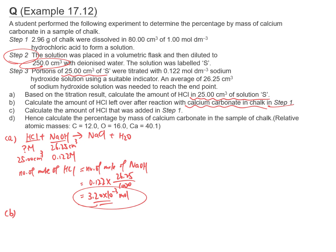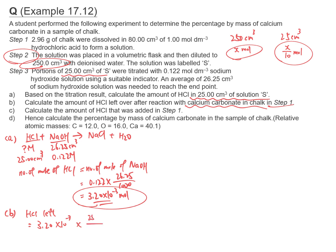Because if you have 250 cm³ of solution with x moles total, and you take out 25 cm³, the number of moles of solute is x divided by 10. So for question B, HCl left equals 3.20 × 10⁻³ times 10, which equals 0.0320 moles.